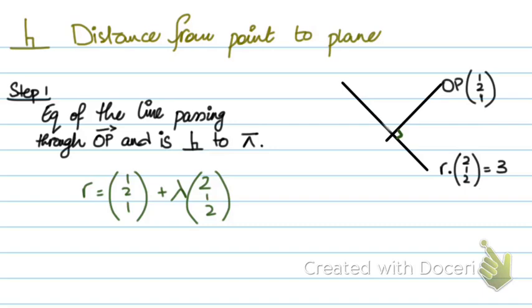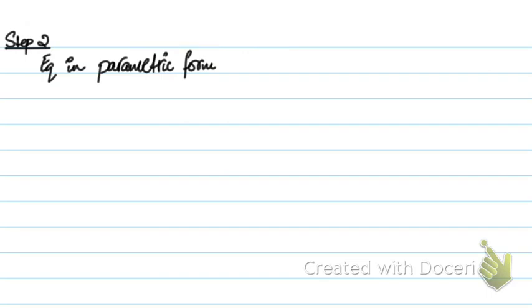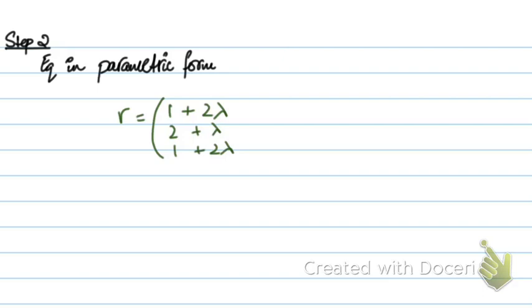That's step 1. Step 2 is to write down this equation in parametric form. So r equals (1 + 2λ, 2 + λ, 1 + 2λ).